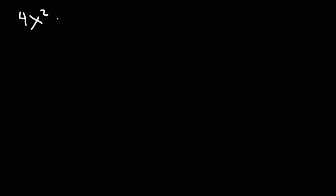Now let's work on another problem, but this one is going to be a little harder. We have 4x squared minus 16x plus 15 equals zero. Find the sum and product of the two roots and confirm your answer just like we did before. Feel free to pause the video. For more problems on quadratic equations, check out the links in the description section below.